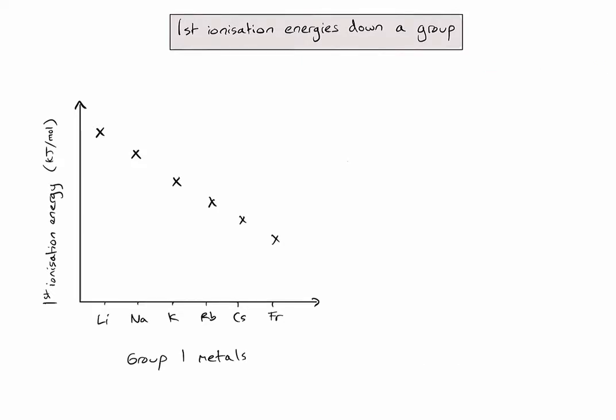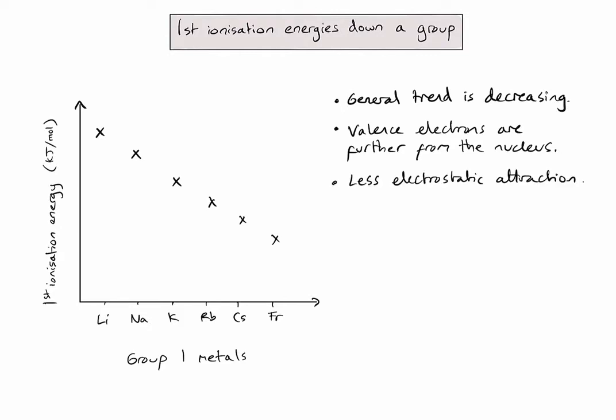The general trend in ionisation energy down a group is decreasing. And this is because the valence electrons are further from the nucleus, meaning there is less electrostatic attraction between those electrons and the nucleus. And this means that less energy is required to remove one of those valence electrons.